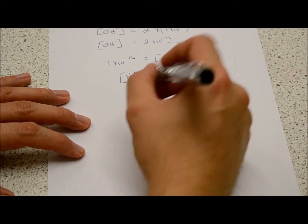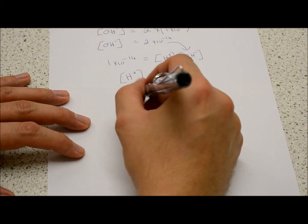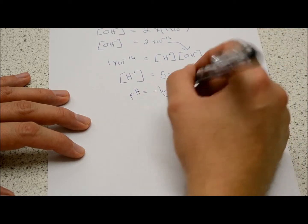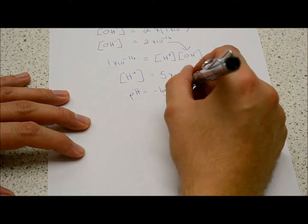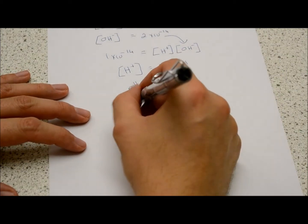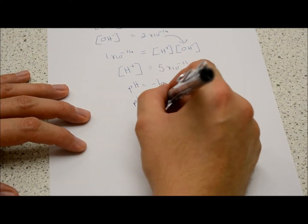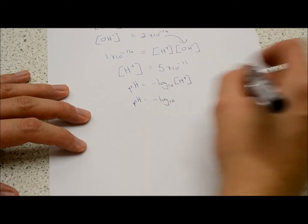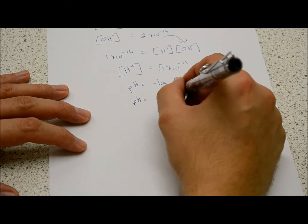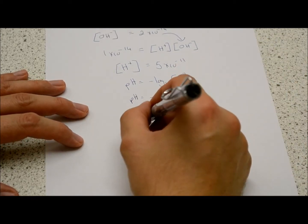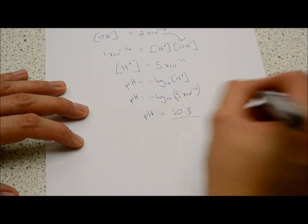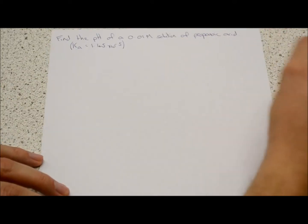Now we plug that into our pH equation: pH equals minus log base 10 of the hydrogen ion concentration, so pH equals minus log base 10 of 5×10⁻¹¹, giving us a pH of 10.3.